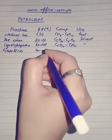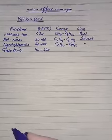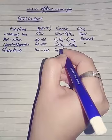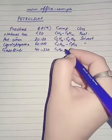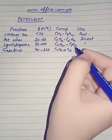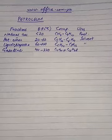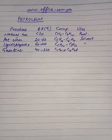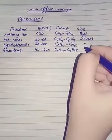The next fraction is gasoline. Gasoline has a boiling point range from 40 to almost 220 degrees centigrade. It has carbon 4 compounds, and most of the gasoline components are within the range of C6 to C8. Gasoline is used as motor fuel.